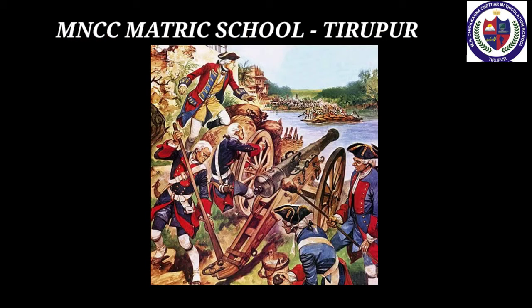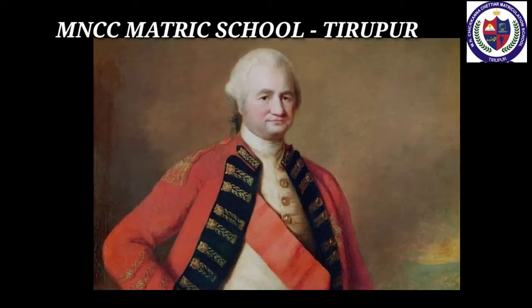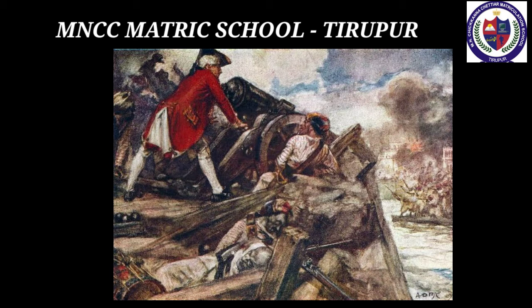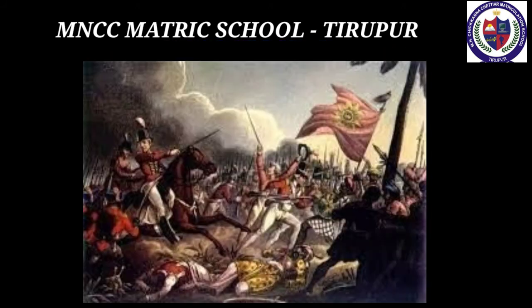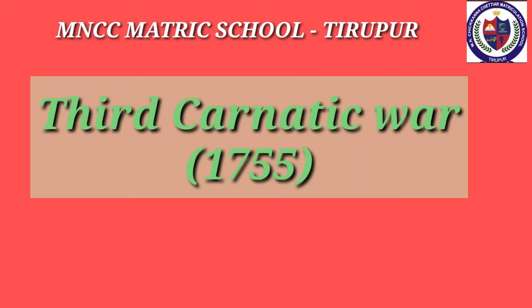Battle of Arcot, 1751: Duplex and Chanda Sahib besieged Trichy. In the meantime, Robert Clive took this opportunity and captured Arcot. Robert Clive defeated the French at Arni and Kaveri Park with the assistance of Lawrence. Chanda Sahib was killed in Trichy and Muhammad Ali was made the Nawab of Arcot under British protection. The French recalled Duplex, and with the Treaty of Pondicherry, Duplex was succeeded by Godeheu. The French lost their power and the English proved their superiority over the land.